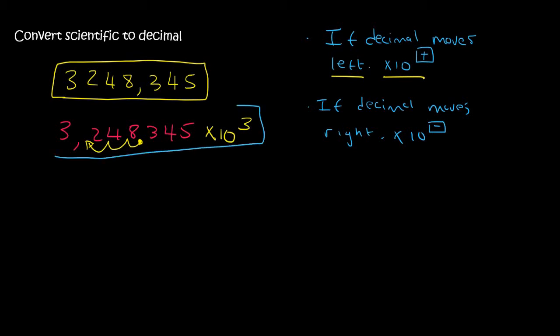But now what if I give you a scientific number? What if I give you this? Then what that means is that we're going to have to try to turn this number back into a decimal number. All right, so I'm going to write this number over here.